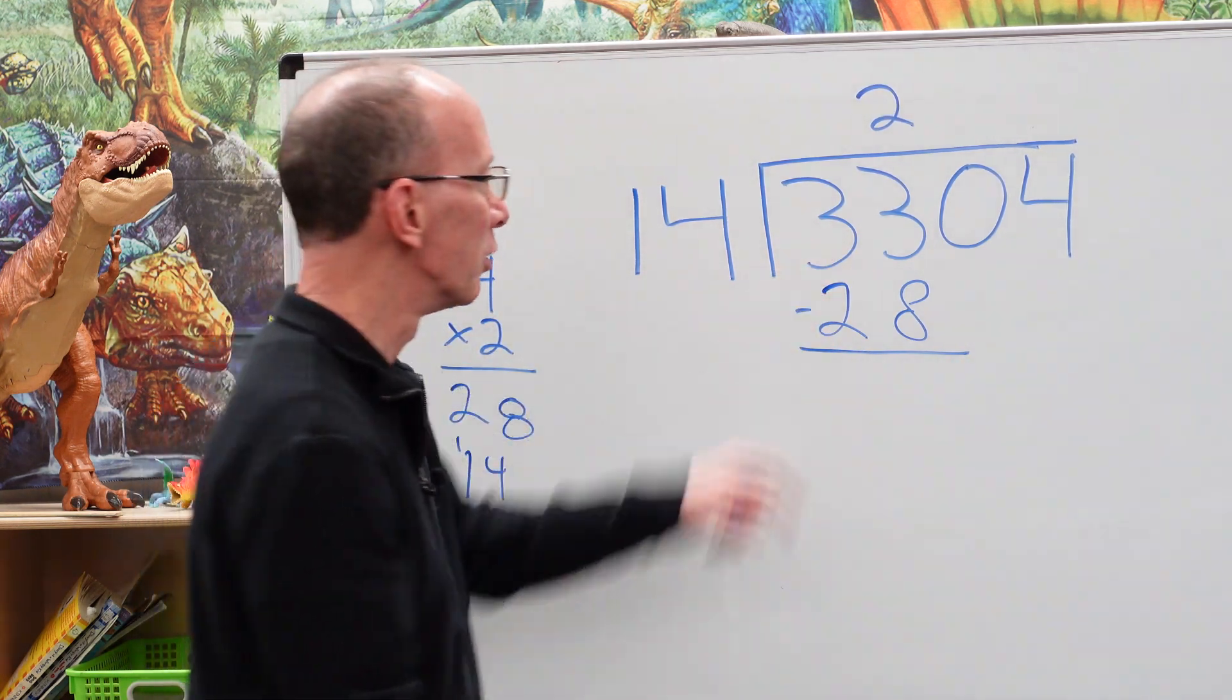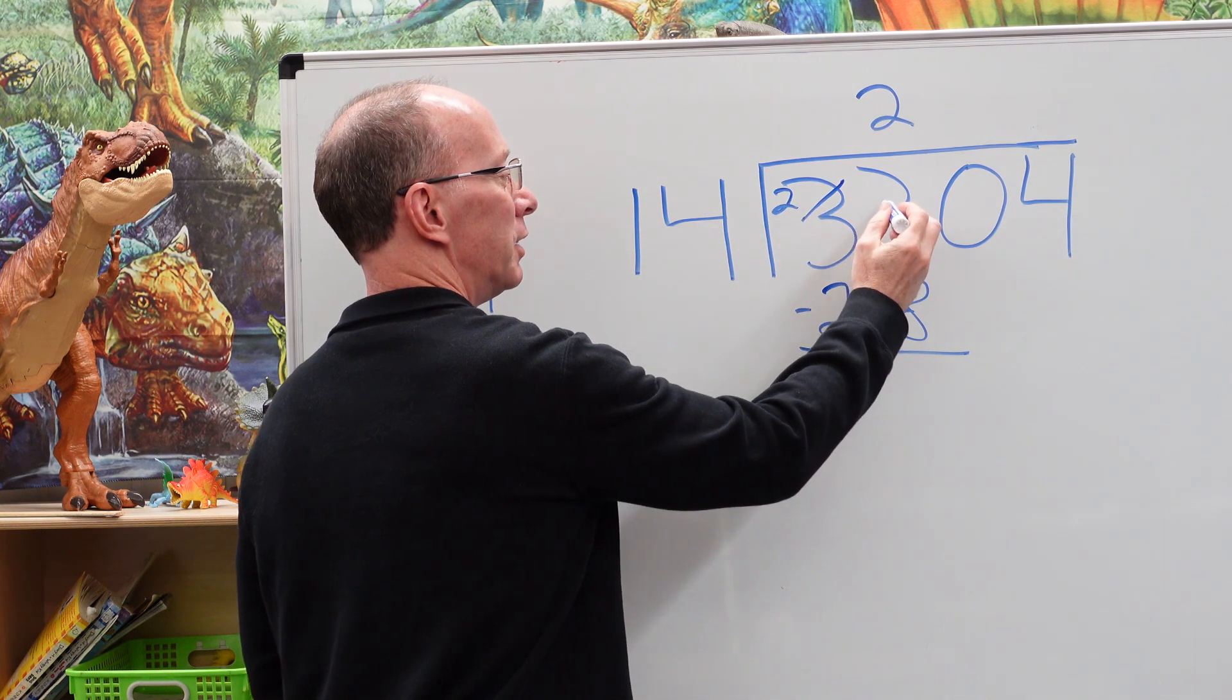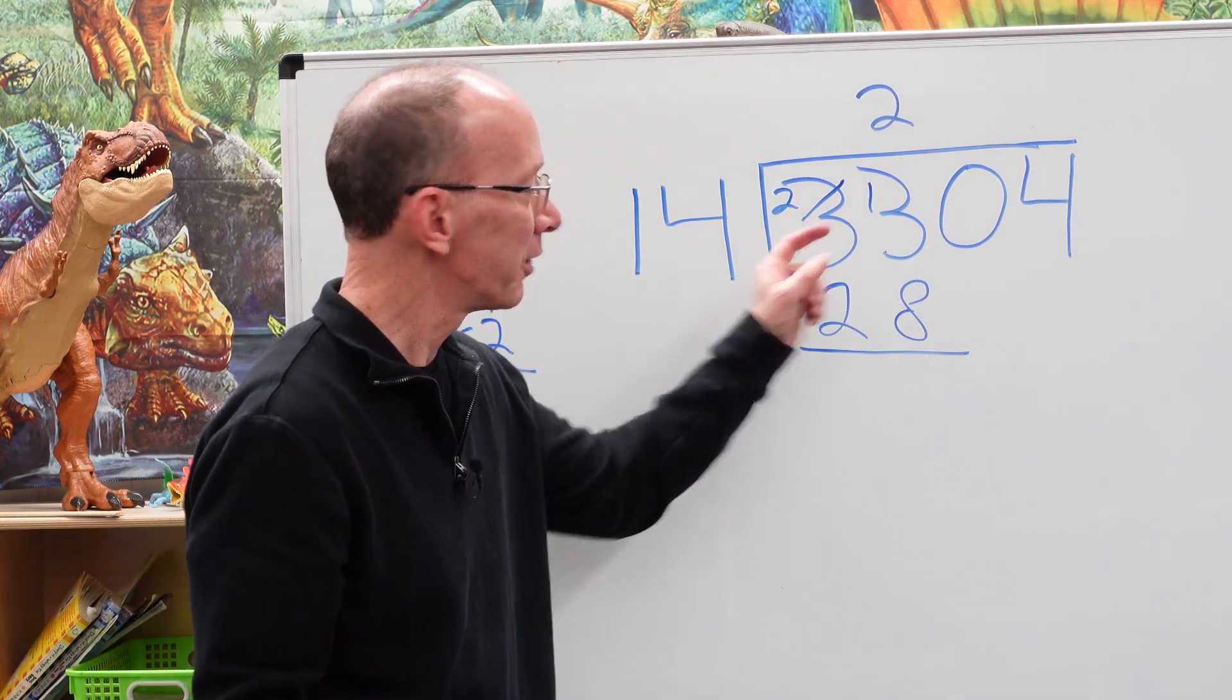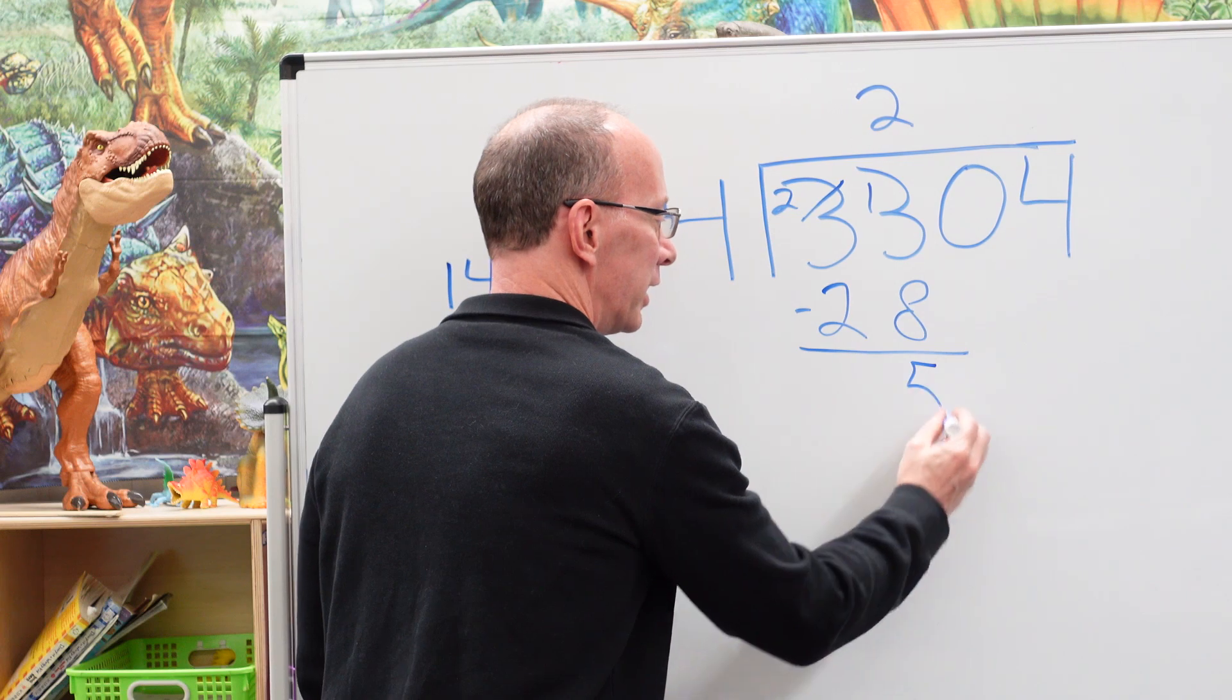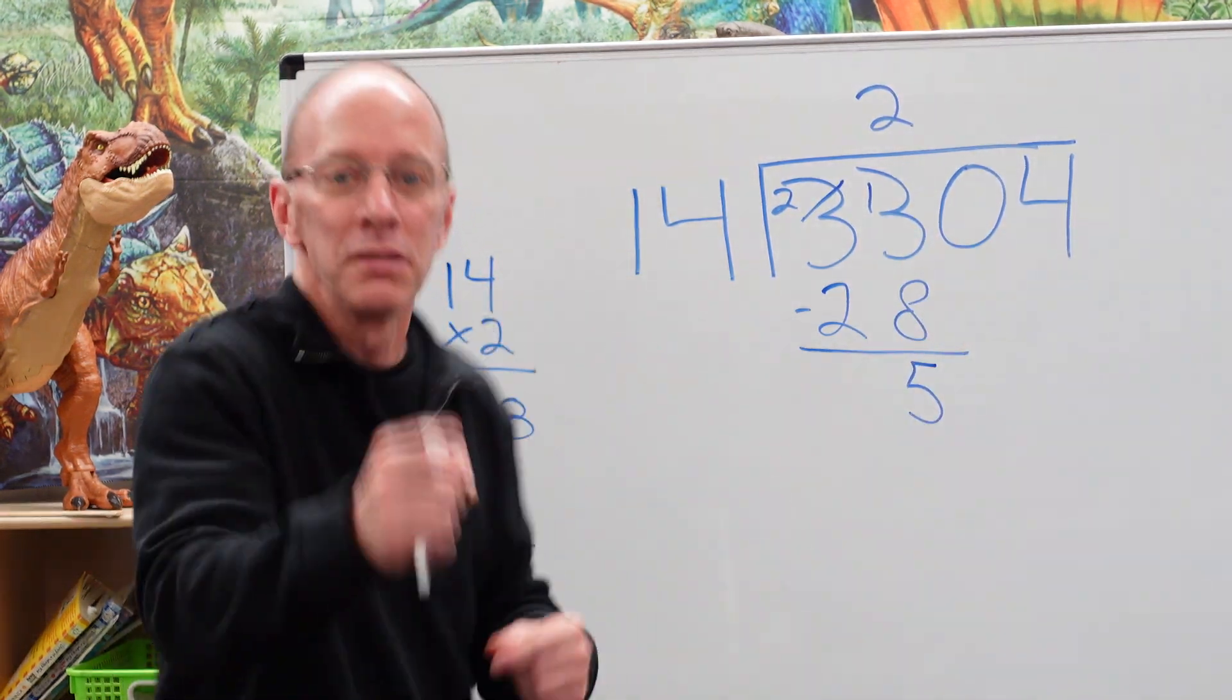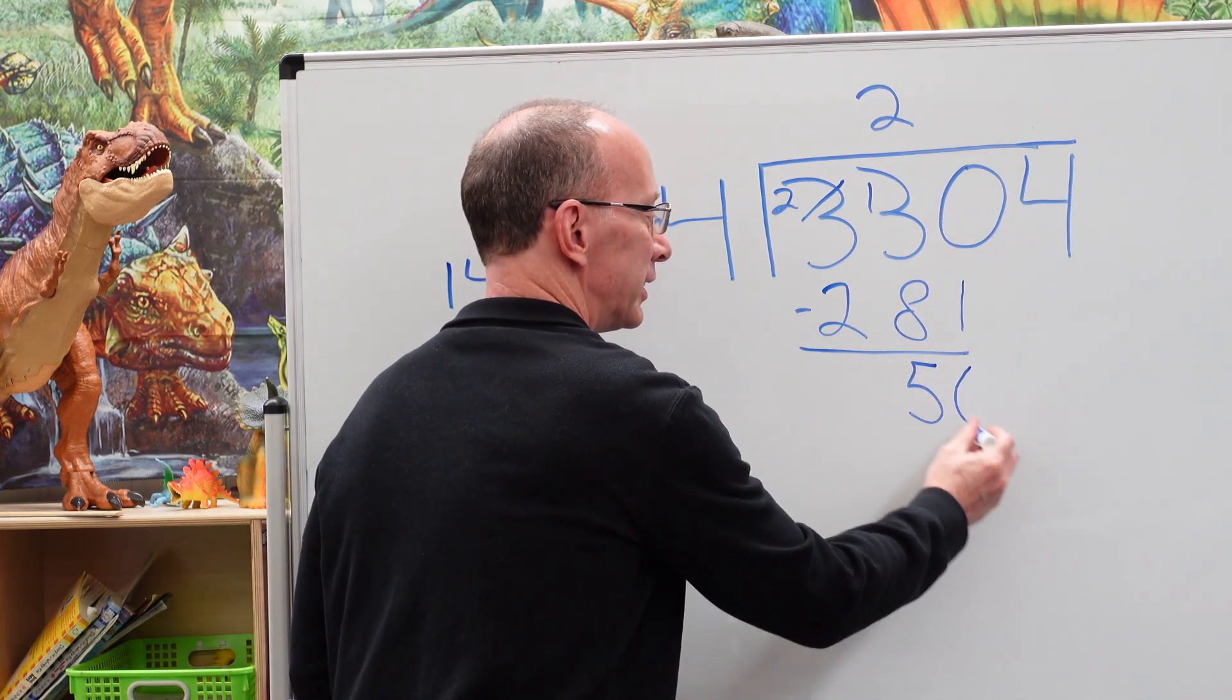Subtract and now I need to do a little borrowing. So I got to borrow 1 from the 3 here. That turns into a 2 and this 3 turns into 13. So 13 minus 8. What is it? 8, 9, 10, 11, 12, 13, 5. We have 5 right here. Then we drop the next number down. Bring that 0 right down here.